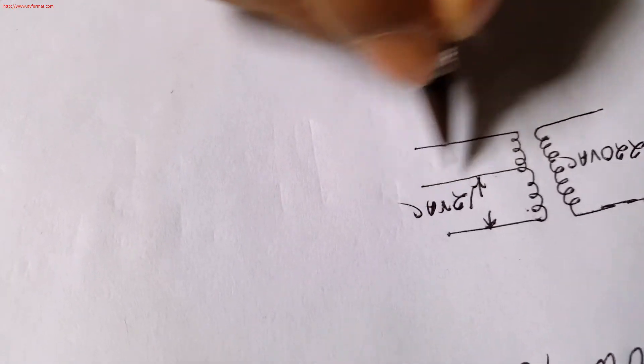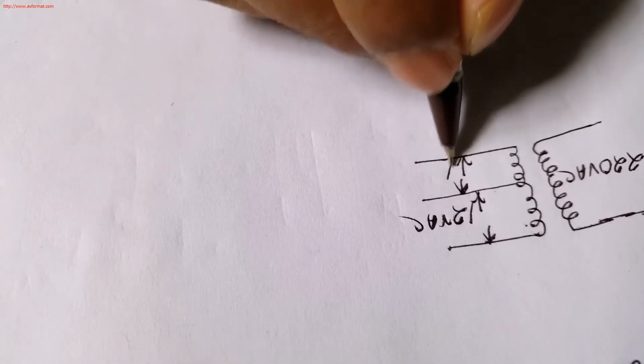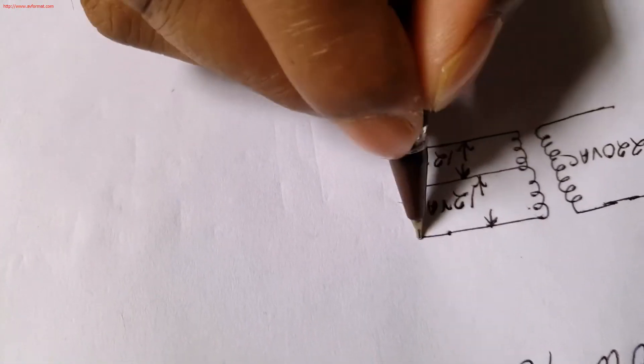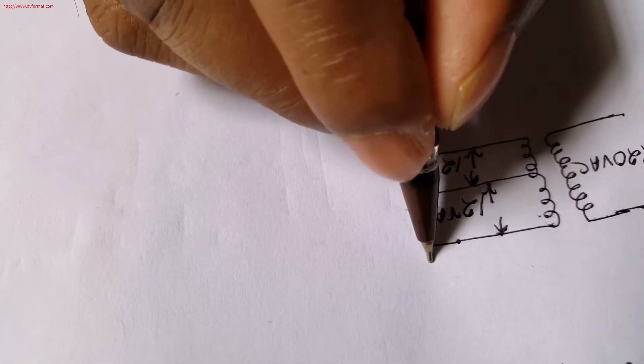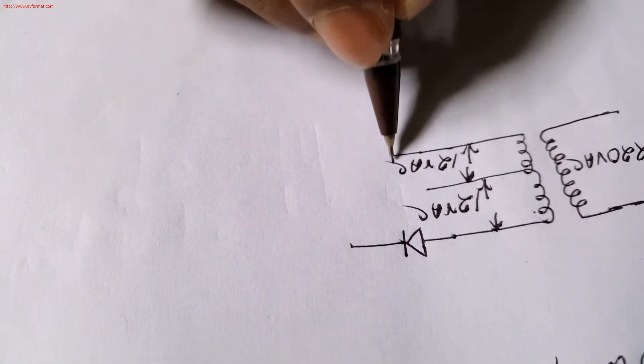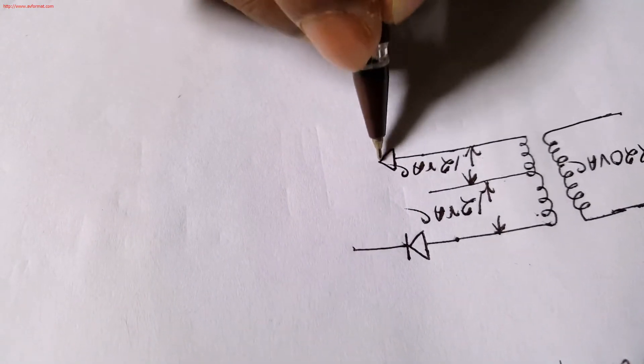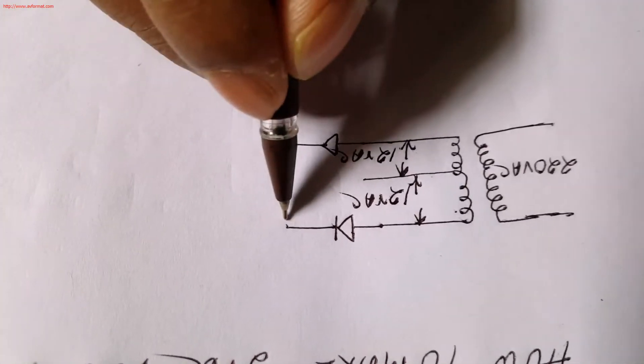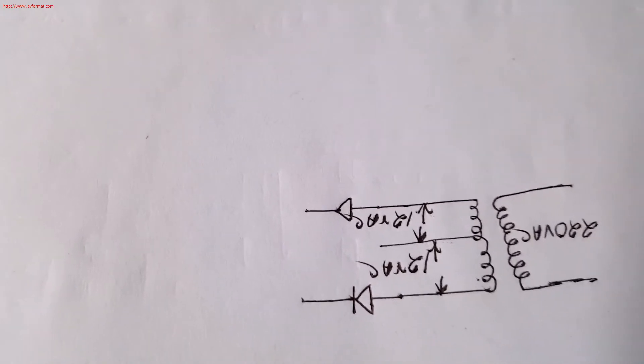So we need diode, we are connecting diode here. We will use two diodes because this is center tap transformer, so we are using two diodes as we need DC output from center tap transformer.